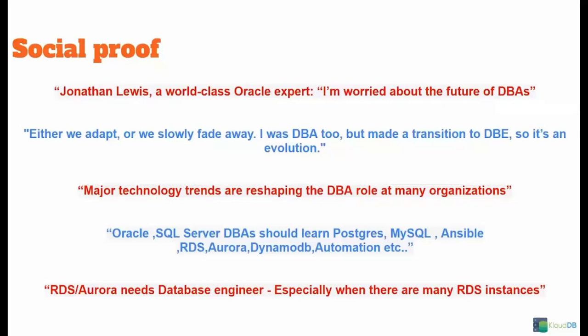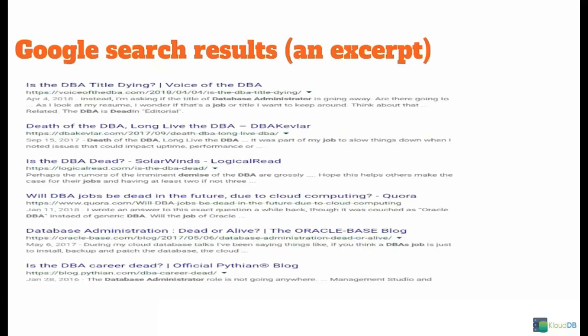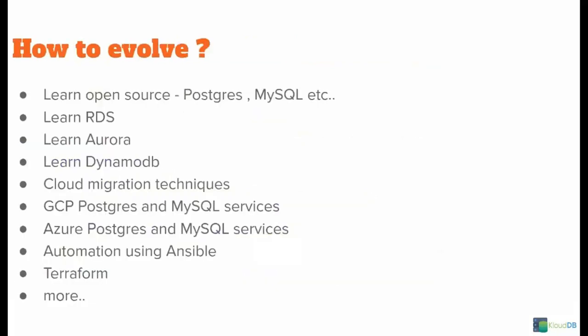Oracle and SQL Server DBAs should learn Postgres, MySQL, Ansible, RDS, Aurora, DynamoDB, and Automation. RDS Aurora needs database engineers, especially when there are many RDS instances. A Google search for 'death of the DBA' or 'DBA title dying' will yield results like this. So how do we evolve? Learn open source Postgres and MySQL, learn RDS, learn Aurora, learn DynamoDB, cloud migration techniques, GCP Postgres and MySQL services, Azure Postgres and MySQL services, automation using Ansible and Terraform, and more. These are some of the technologies you should learn in order to evolve.